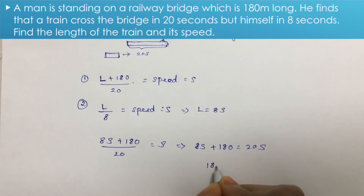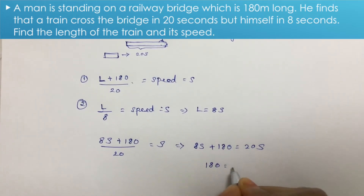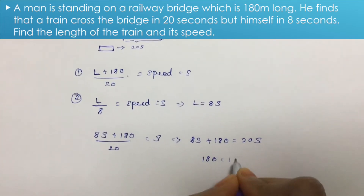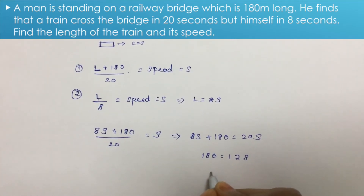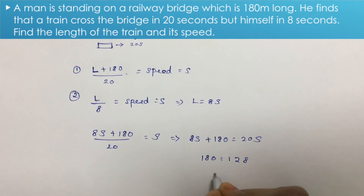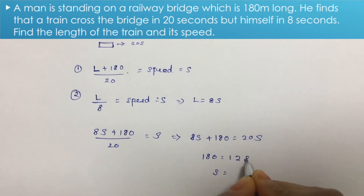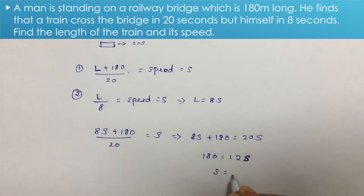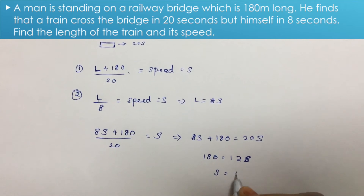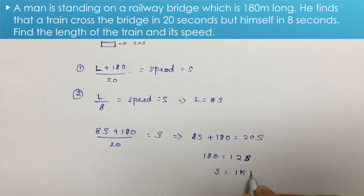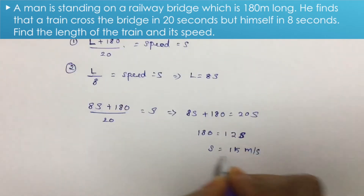So 180 equals 12S, which gives S equals 15. Therefore the speed is 15 meters per second.